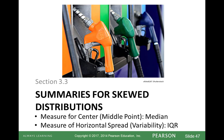In section 3.2, we talked about summaries for symmetrical distributions. That was the mean for the measure of center and standard deviation for the measure of variability or horizontal spread. Now we're going to move to skewed distributions. We're going to talk about the median for the middle point and the IQR for the measure of variability, and we'll discuss what those mean and how we find those values.